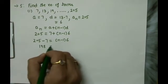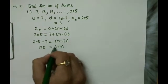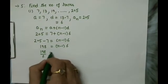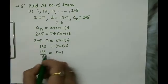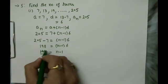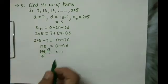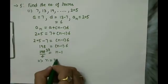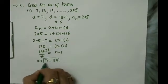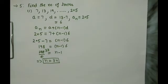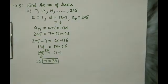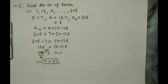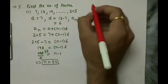Substituting: 205 equals 7 plus n minus 1 into 6. Transposing 7 to the left: 205 minus 7 equals 198 equals n minus 1 into 6. Cross multiplying: 198 divided by 6 equals 33 equals n minus 1. So n equals 34. The first part of question 5 is done. Try the second part at home.